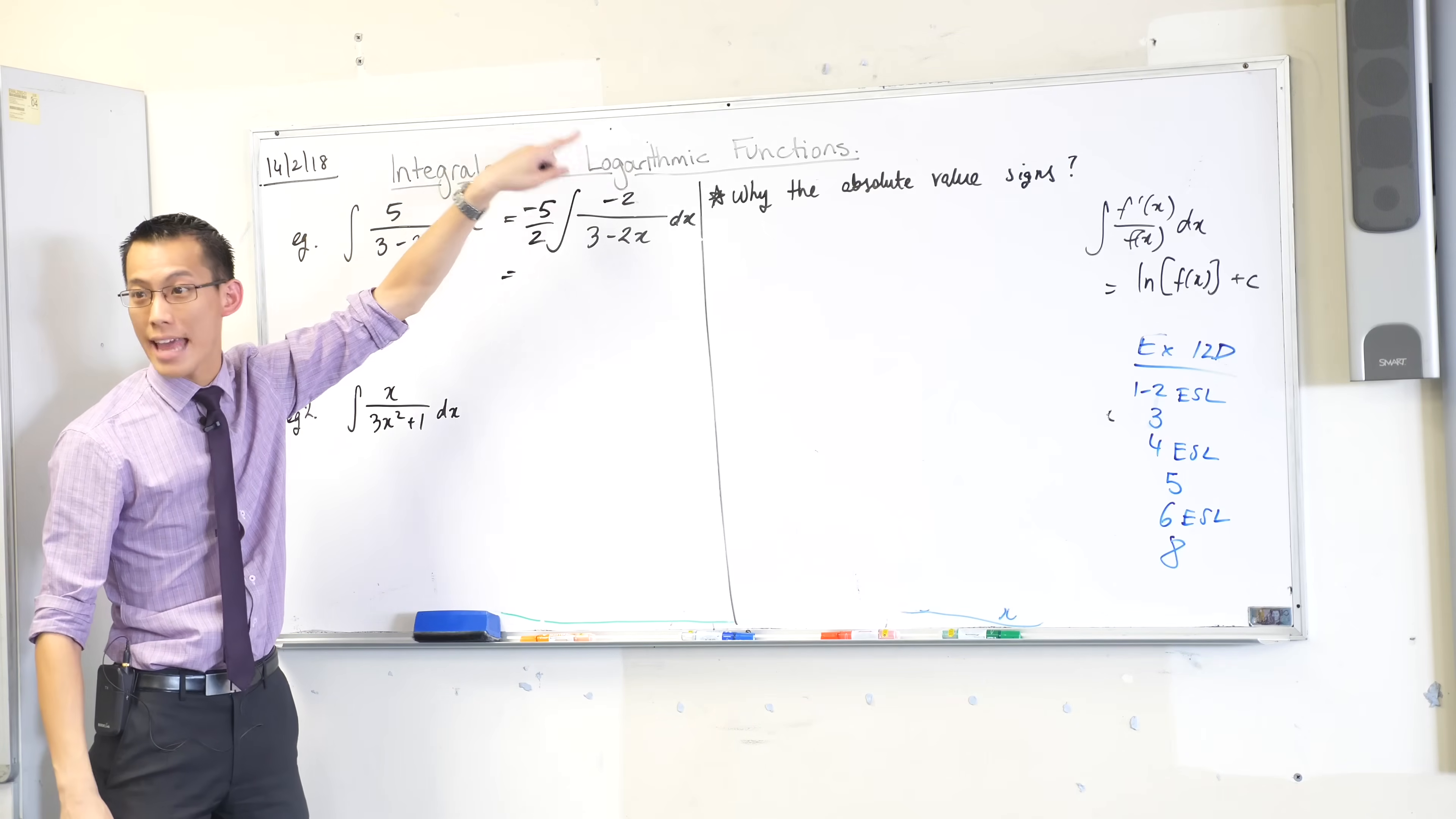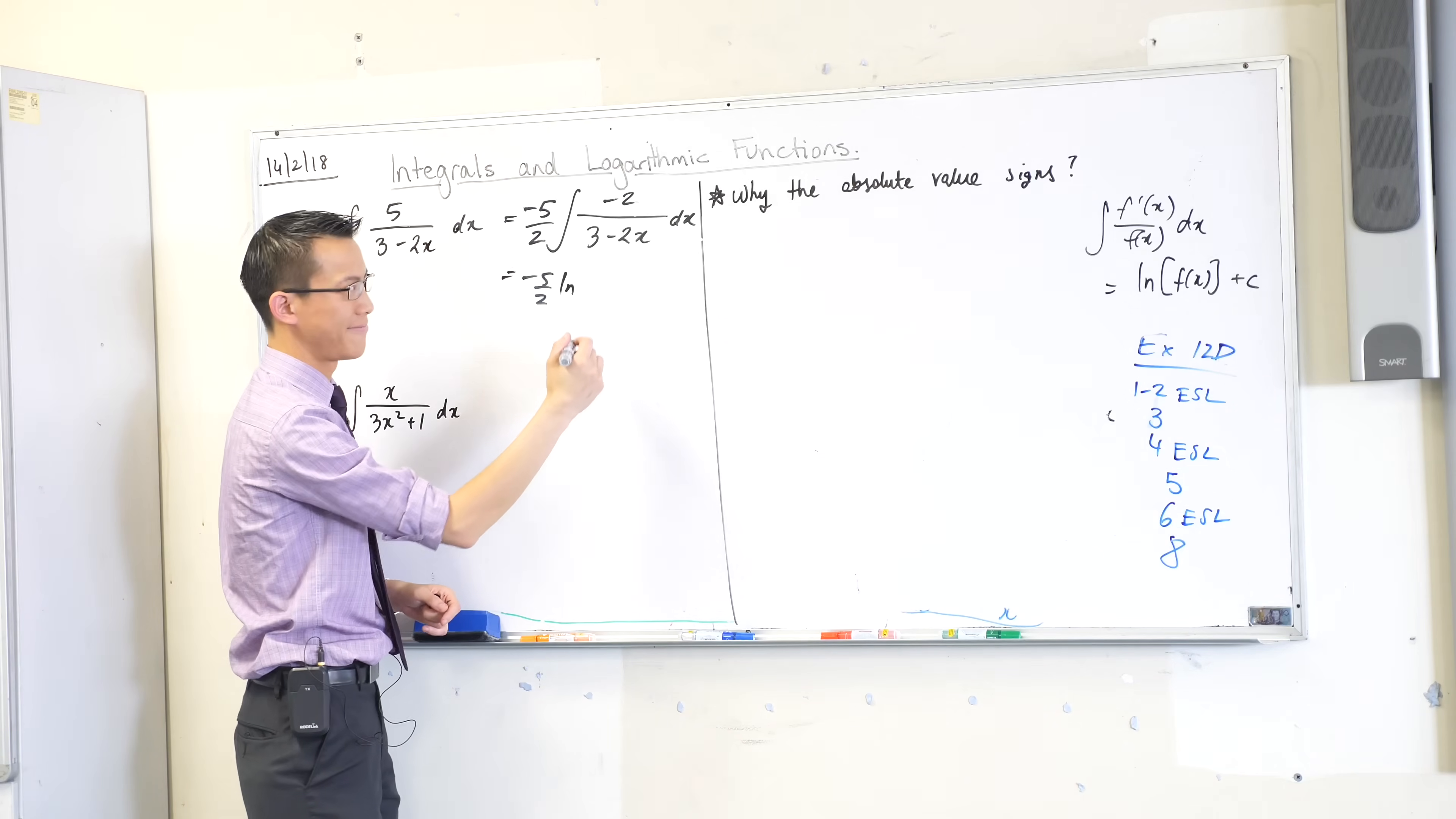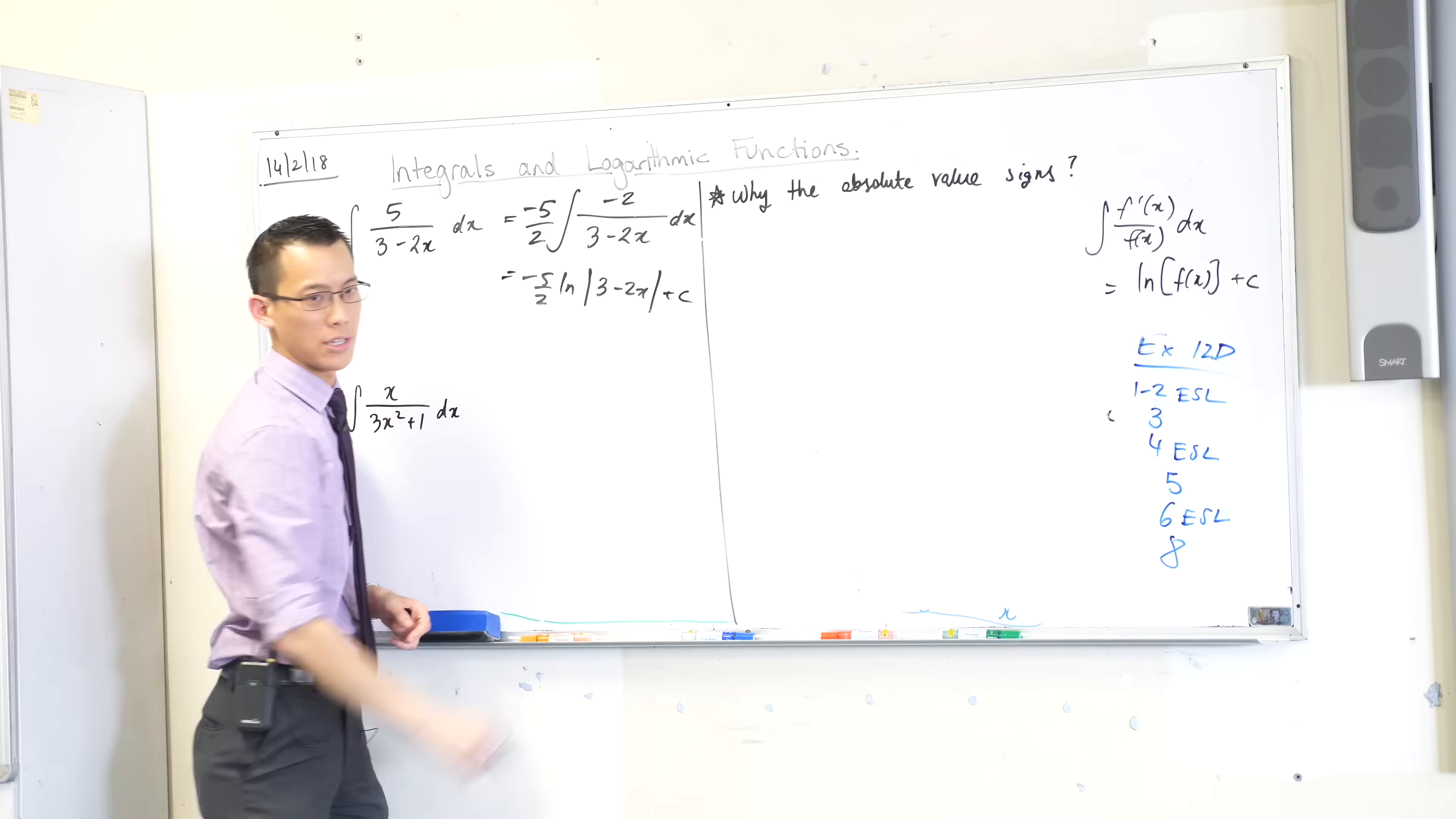That integrand, this guy here, is now f dash on f. Do you see it? So the minus five over two is there out the front, where it always was. Log of what? The absolute value of three minus two x. It's indefinite, so plus c. Happy times.